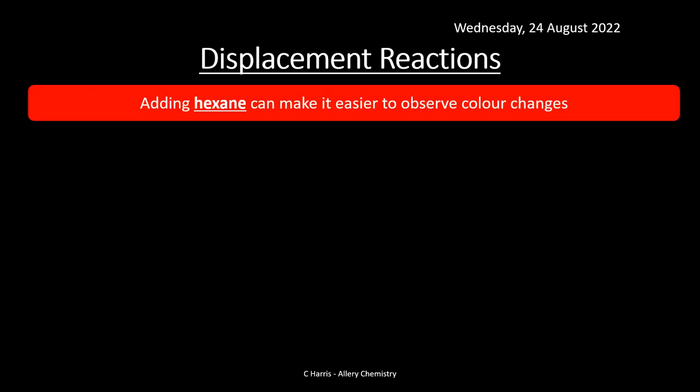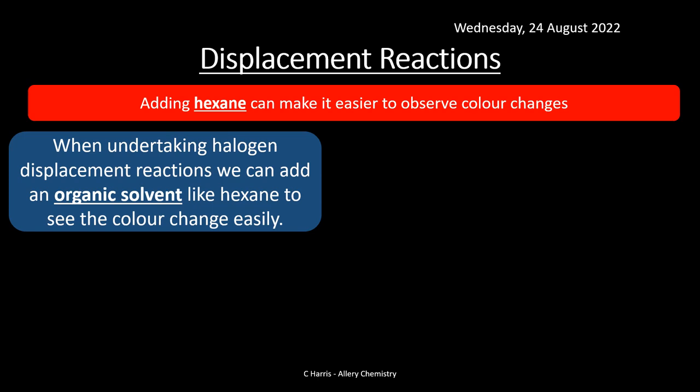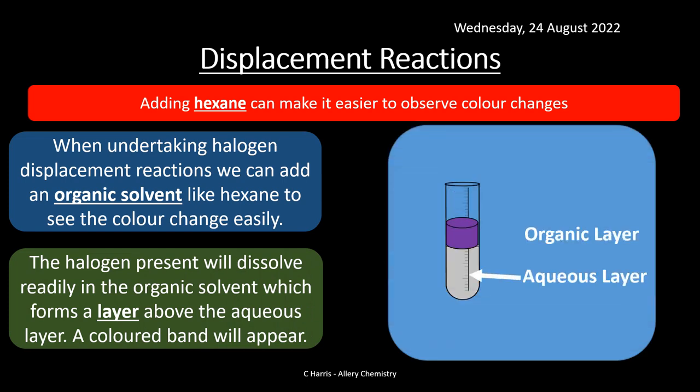Let's look at displacement reactions. We can add hexane — an organic solvent you'll encounter in topic 13 on organic chemistry — to make color changes easier to observe during halogen displacement reactions. The halogen produced dissolves readily in the organic solvent, which forms a layer above the aqueous layer, and a colored band appears.